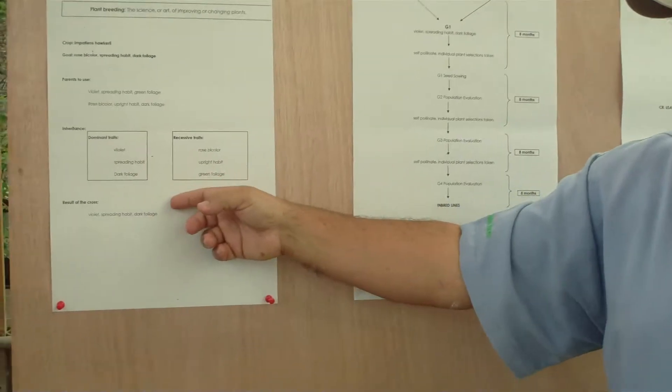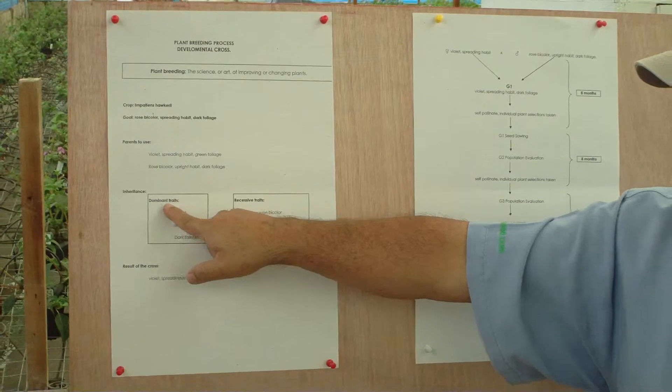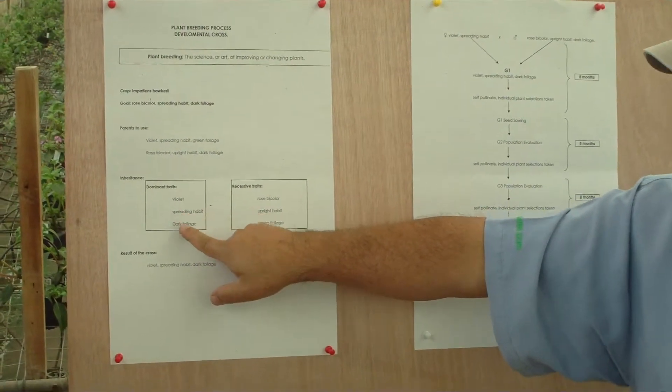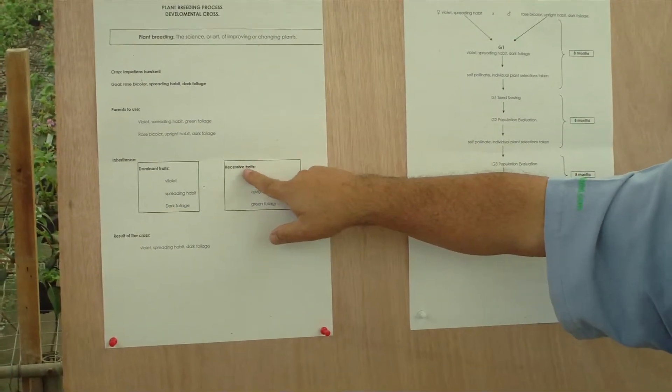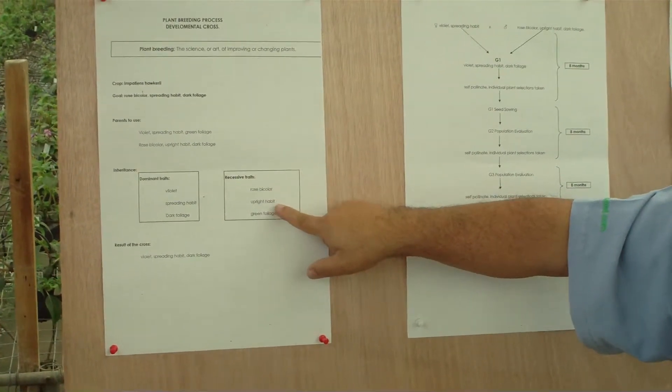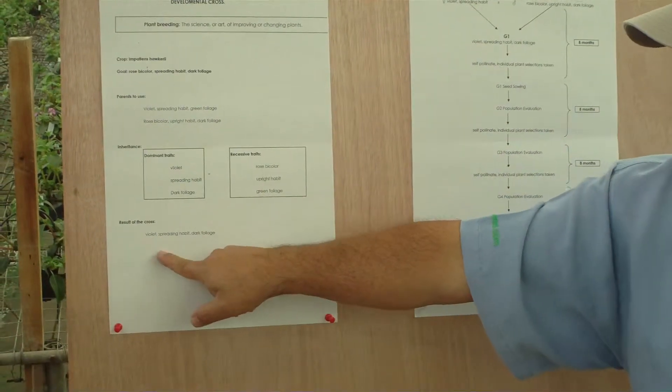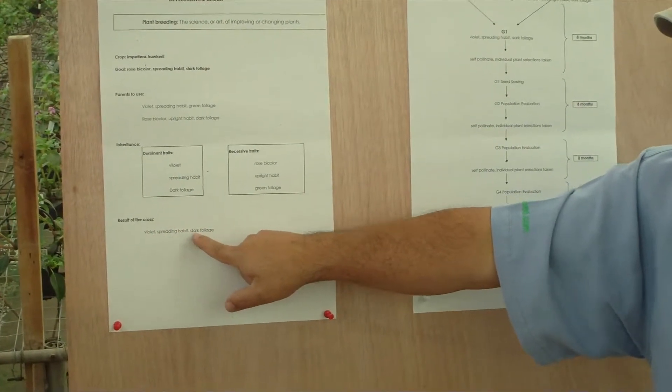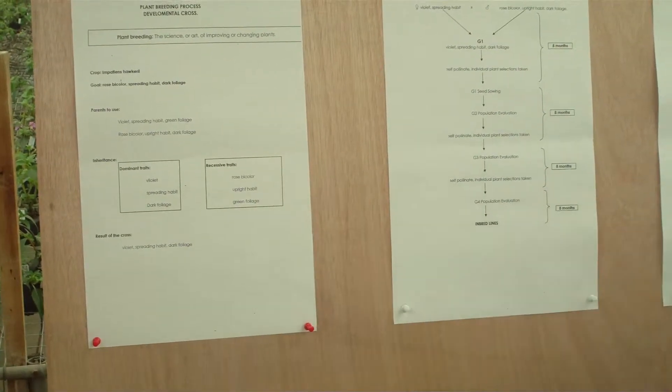For example, once I make this cross, I'll give you here, using one plant with the dominant traits, the violet color with the spreading habit with the dark foliage, crossed by the ones which have the recessive trait, which is rose bicolor, upright habit, and green foliage, is going to give us this. The product of the plant is going to be violet, spreading habit, and dark foliage. In other words, all the recessive colors are going to be hiding.